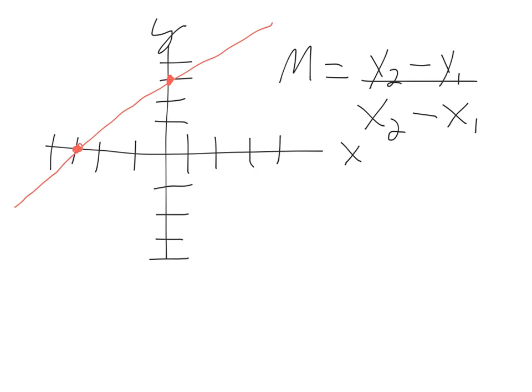So the formula for finding the slope of two points is M equals y2 minus y1 over x2 minus x1. Well, what is y2 and what is y1 and what is x2 and what is x1? What you have to do is you have to find what these two points are.